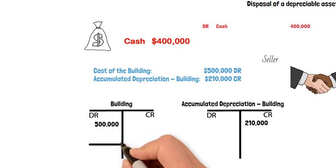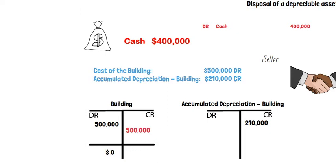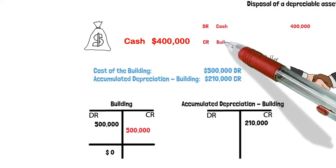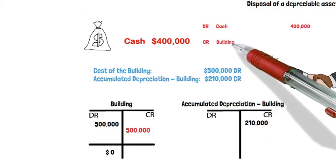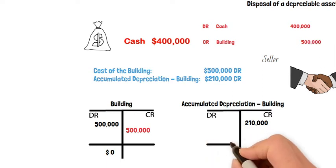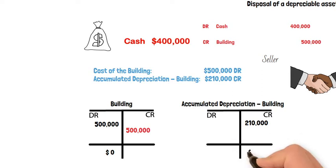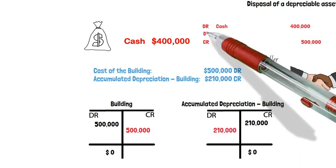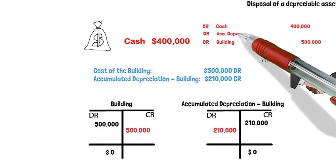Now the building account should be zero because the seller does not own the building anymore. Therefore, we have to credit building for $500,000 to make the building T-account have a zero balance. Similarly, the cumulative depreciation building account should have a zero balance, so we have to debit this account for $210,000.